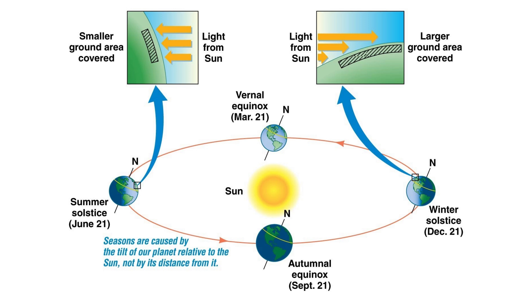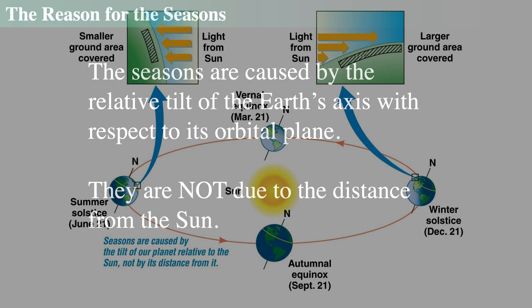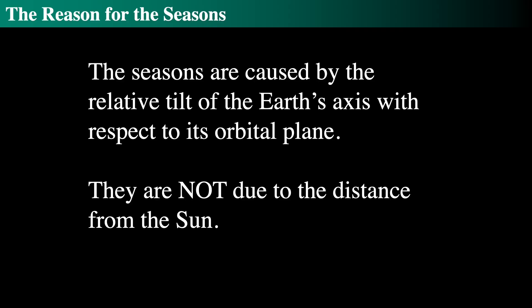The seasons are not due to the distance between the Earth and the sun. In fact, we are closer to the sun during the northern hemisphere winter than in summer — that's just the ellipticity of Earth's orbit, which is very small. So if it were about distance, we would be hotter in winter. The angle of incidence of the sun's light on the surface of the Earth drives everything. Seasons are caused by the relative tilt of the Earth's axis with respect to its orbital plane, not by distance from the sun.